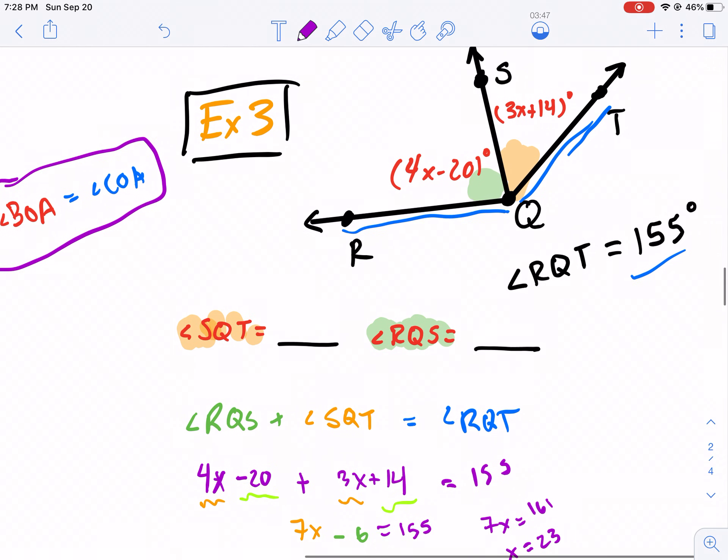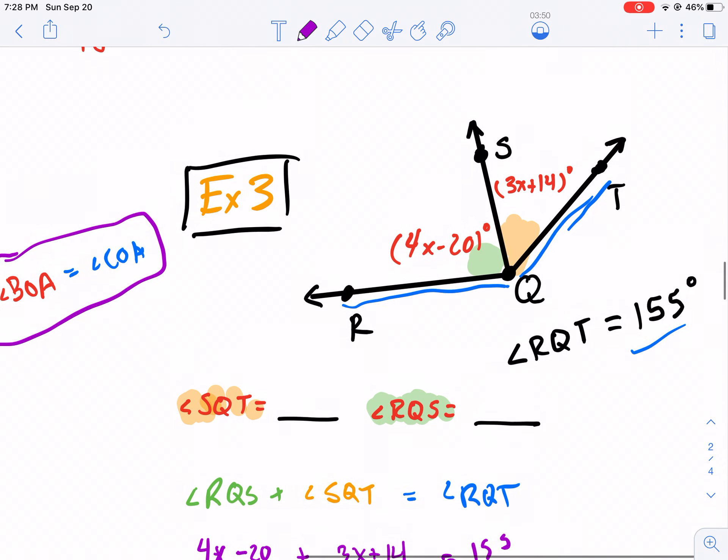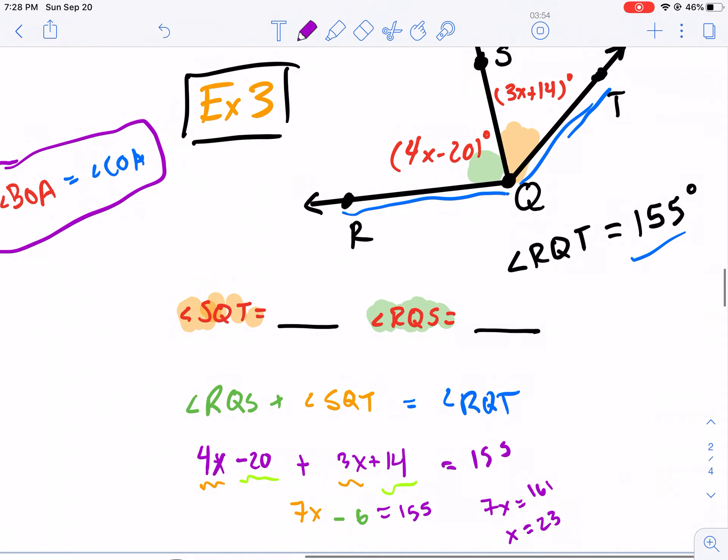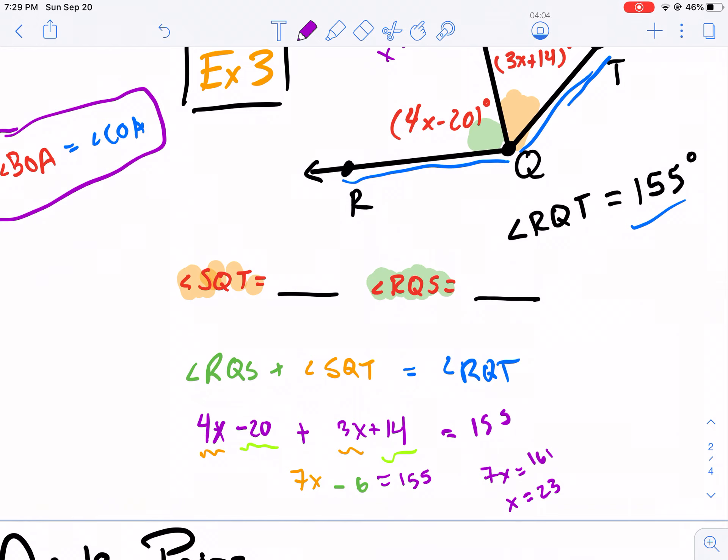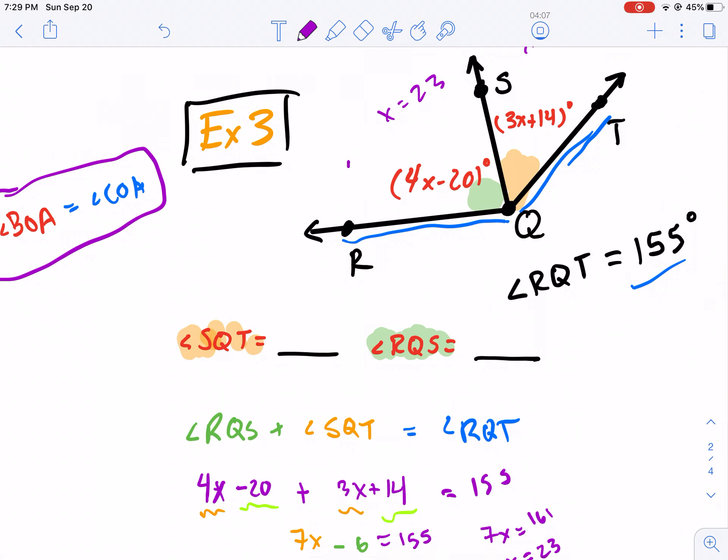So now what I'm going to do is I'm going to say 4X minus 20. I'm going to say instead 4 times 23 minus 20. And that's going to be my answer for RQS. So I do 4 times 23, and then I'm minus 20 and I get 72. So this is 72 degrees. That's RQS.